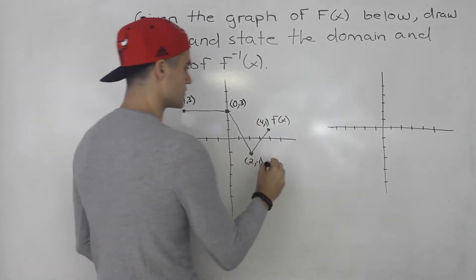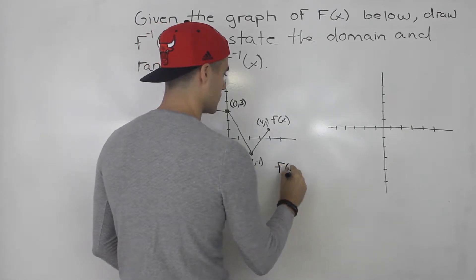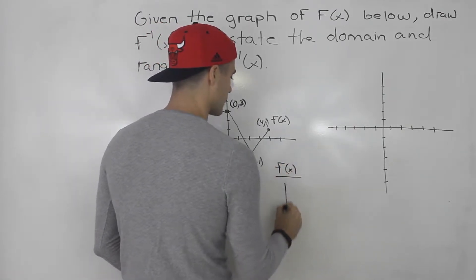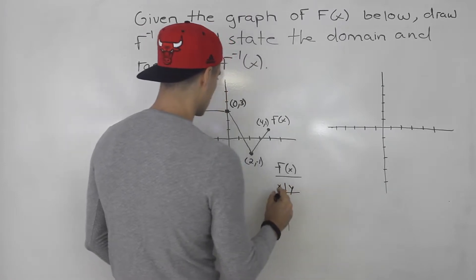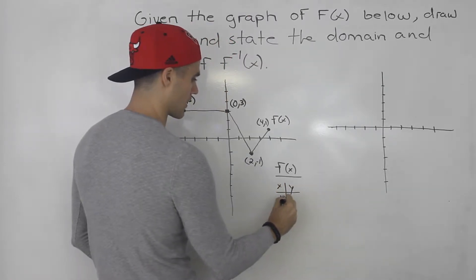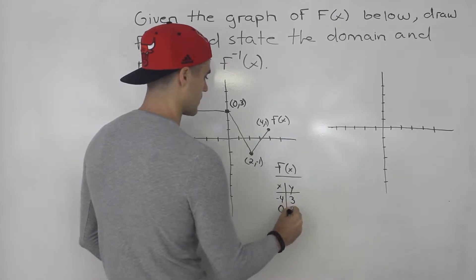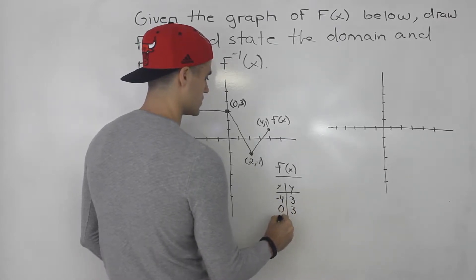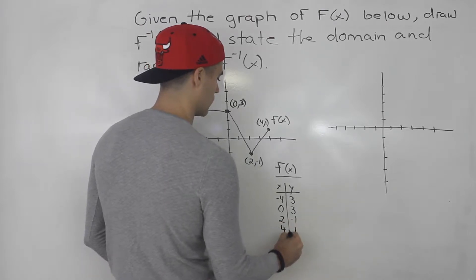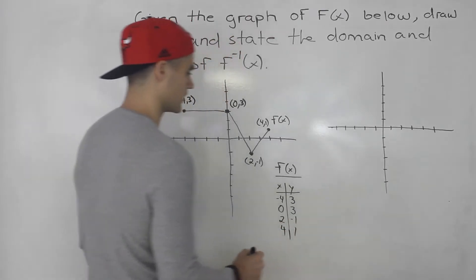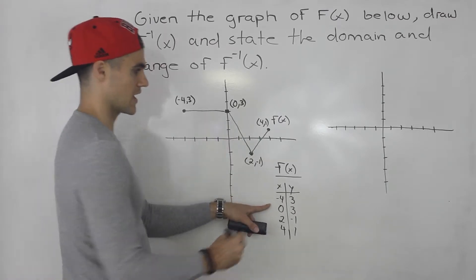So what you can do is take these coordinates and put them in a table. The table for f of x is going to be: negative 4 and 3, 0 and 3, 2 and negative 1, 4 and 1. So this is the table for f of x — I took all the coordinates and put them in a table.